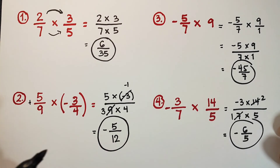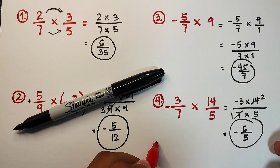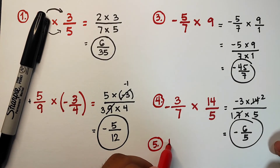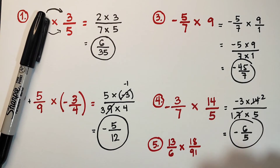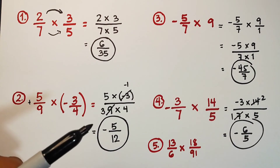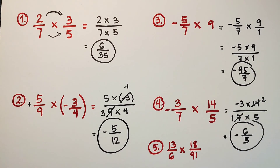I hope you learned something from this video. I will give you an assignment: answer number five, which is thirteen over six times eighteen over ninety-one. I hope to see your answers in the comment section. If you're new to my channel, don't forget to like and subscribe and hit the bell button to be updated on our latest uploads. Again, it's me Teacher Gorn — maraming salamat, bye bye!